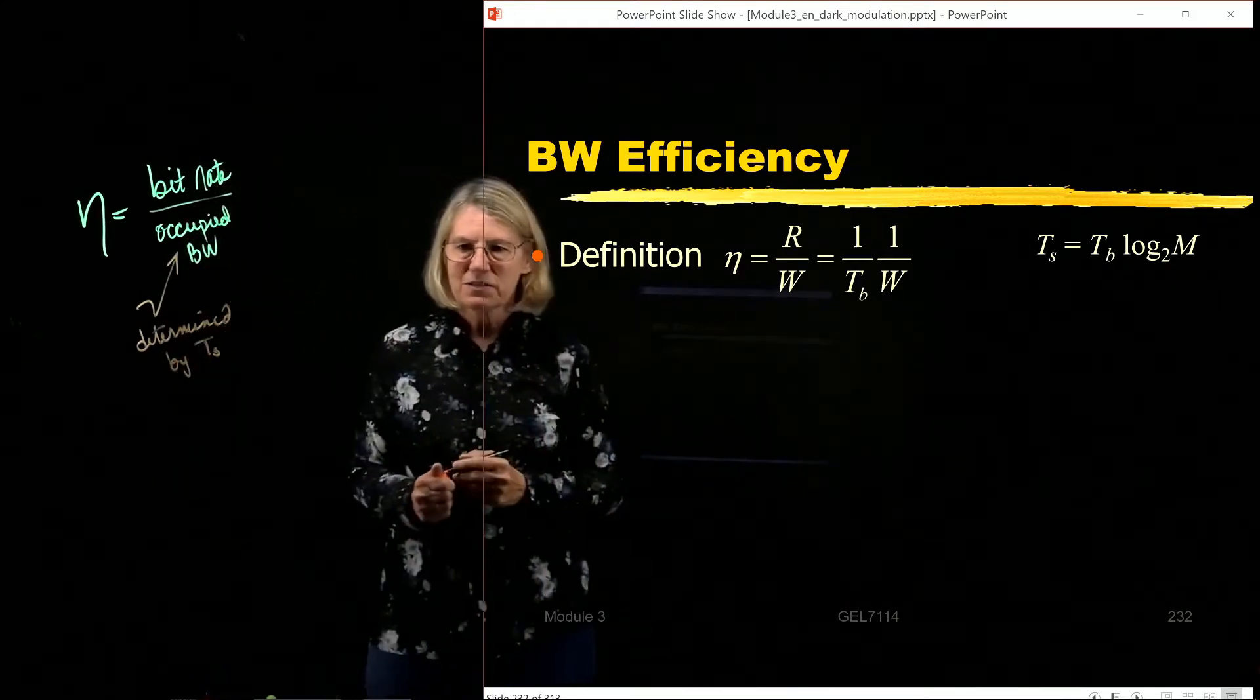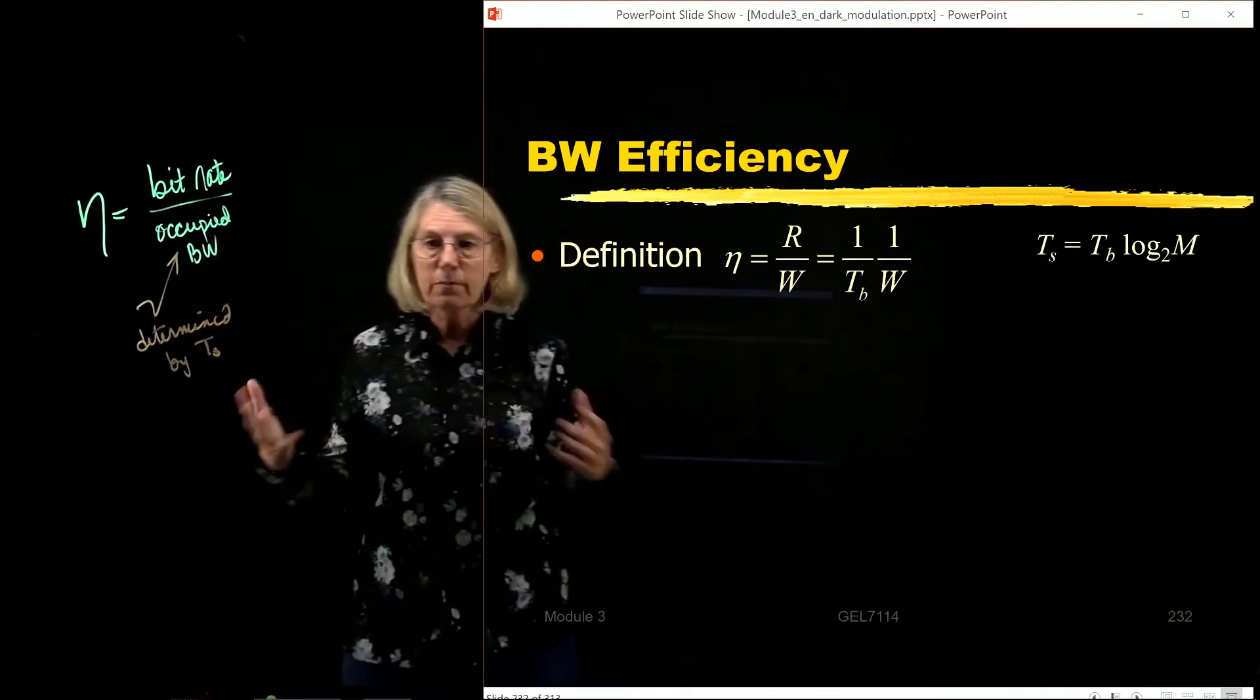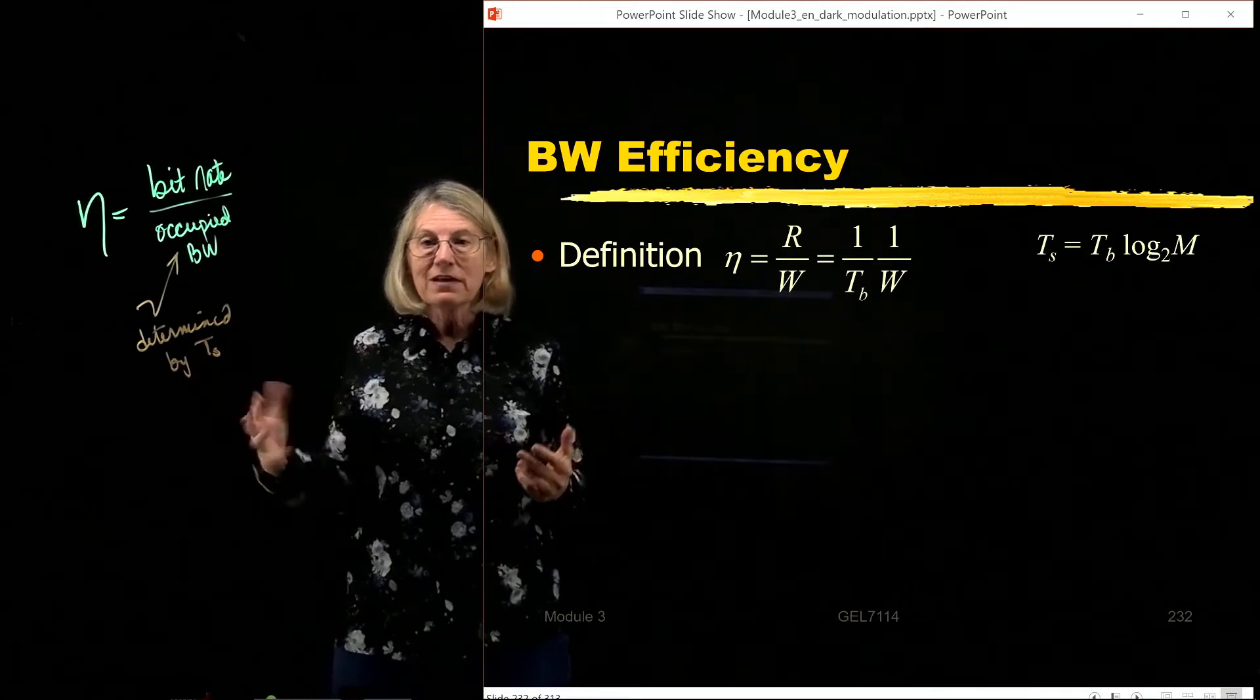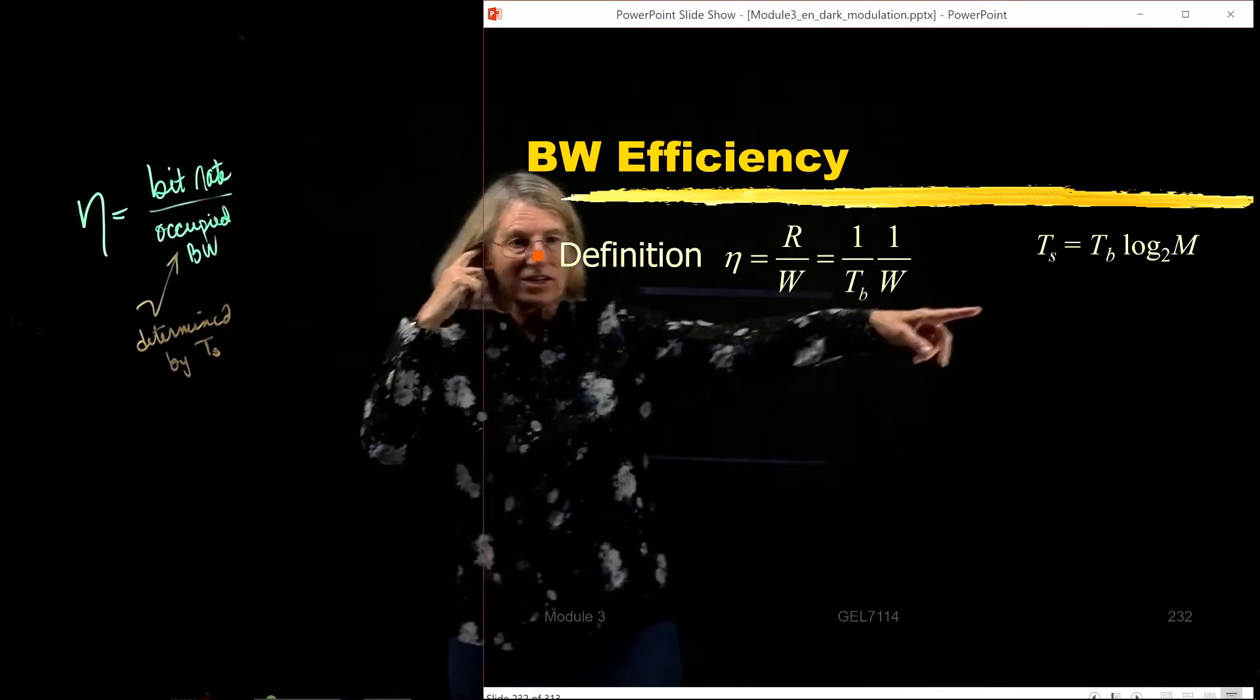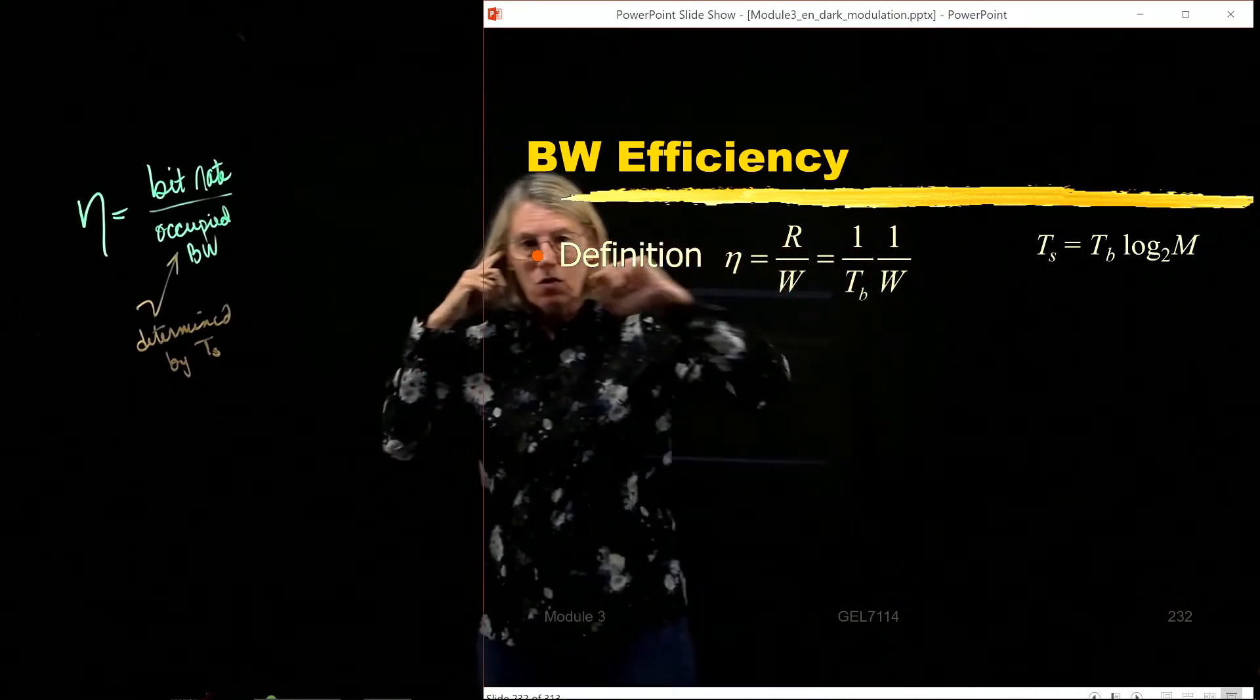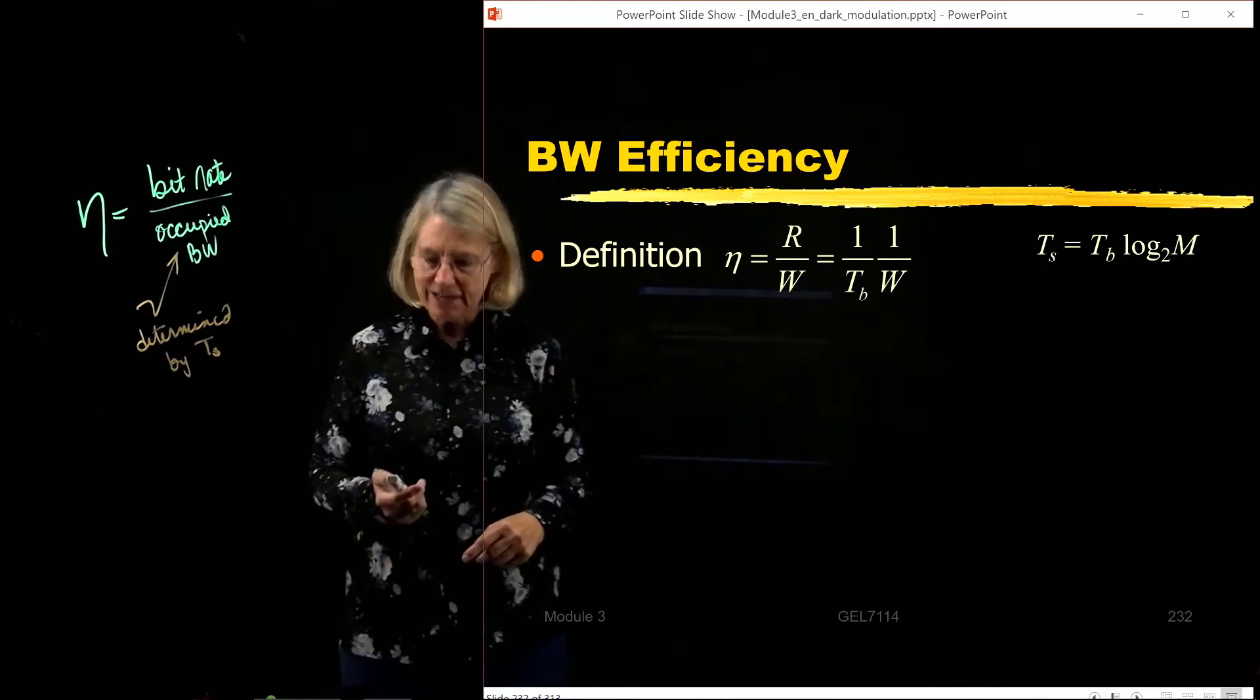And that's because the occupied bandwidth is determined by Ts. Depending on which modulation format I'm using, what value of m, the occupied bandwidth is a function of Ts. So I need that log 2m. So that's why I'm mentioning this relationship because it's going to come up in our calculations.